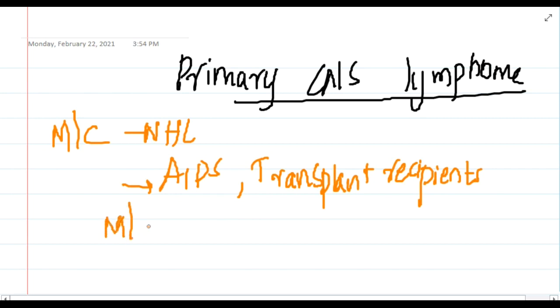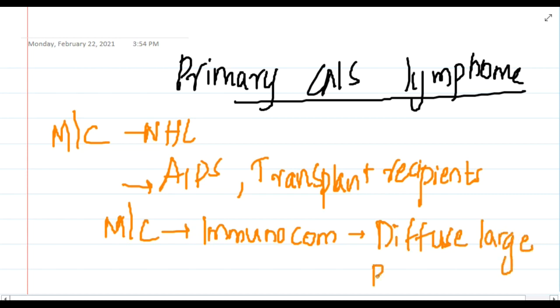This primary CNS lymphoma is sometimes also seen in immunocompetent persons. If it is seen in immunocompetent persons, this is a type of diffuse large B-cell lymphoma.